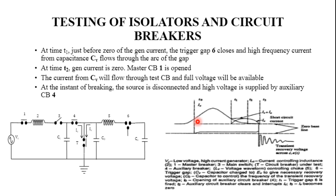In addition to direct and synthetic testing, composite testing, unit testing, and asymmetry tests are also performed. These are the different methods for testing isolators and circuit breakers.